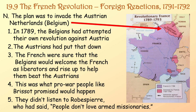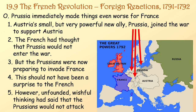The plan was to invade the Austrian Netherlands — Belgium. In 1789, the Belgians had actually attempted their own revolution against Austria at the very same time as the French Revolution. The Austrians had put that revolution down, and the French were sure the Belgians would welcome them as liberators and rise up to help beat the Austrians. This was what pro-war people like Brissot had promised would happen — they didn't listen to Robespierre, who had said people don't love armed missionaries. Prussia immediately made things even worse — it joined the war to support Austria. The French had thought Prussia would not enter the war, but unfounded wishful thinking had said the Prussians would not attack.